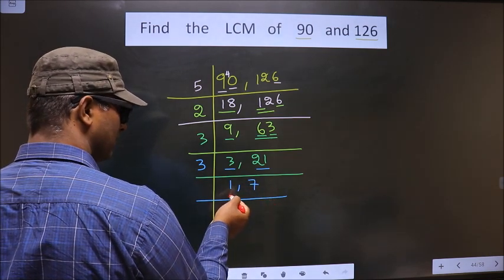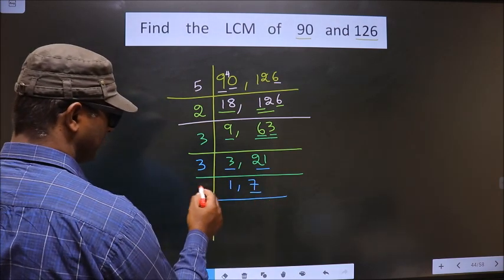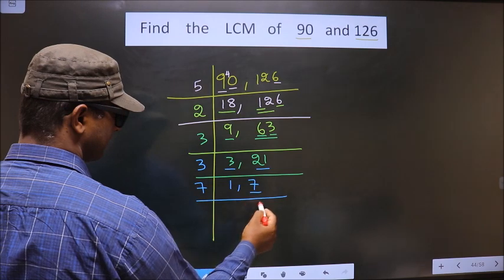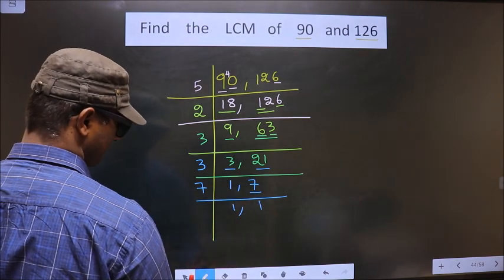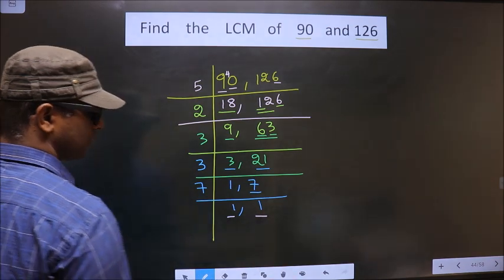Now, here we got 1. So, we focus on to the next number that is 7. 7 is the prime number, so we take 7 times 1 is 7. So, now we got 1 in both the places.